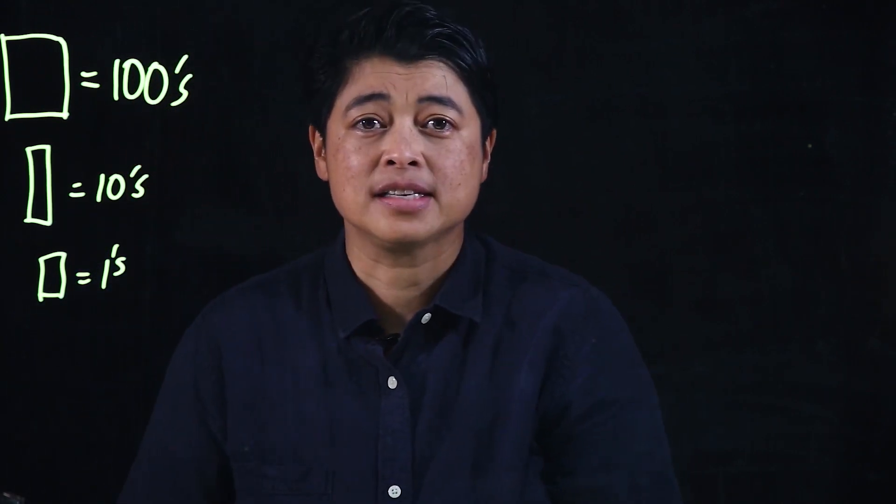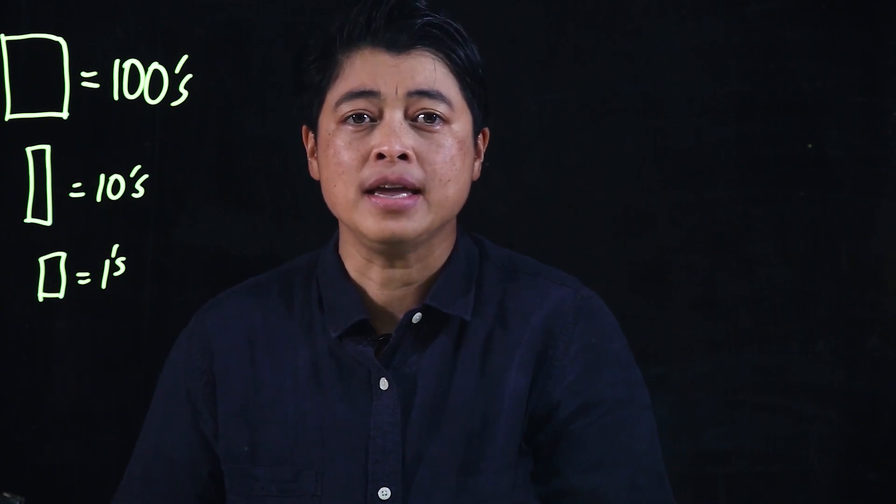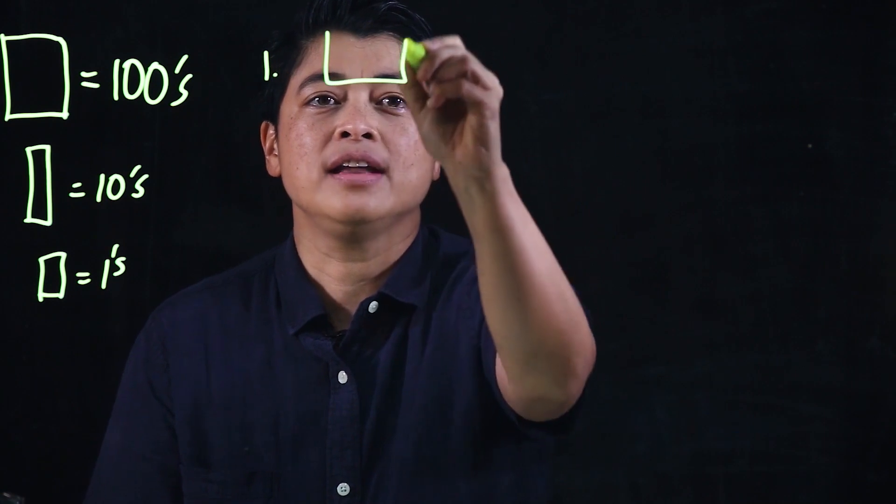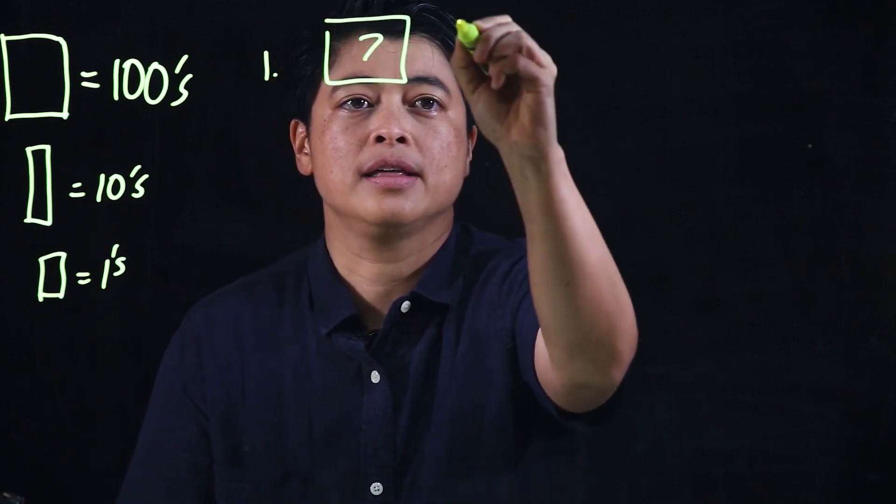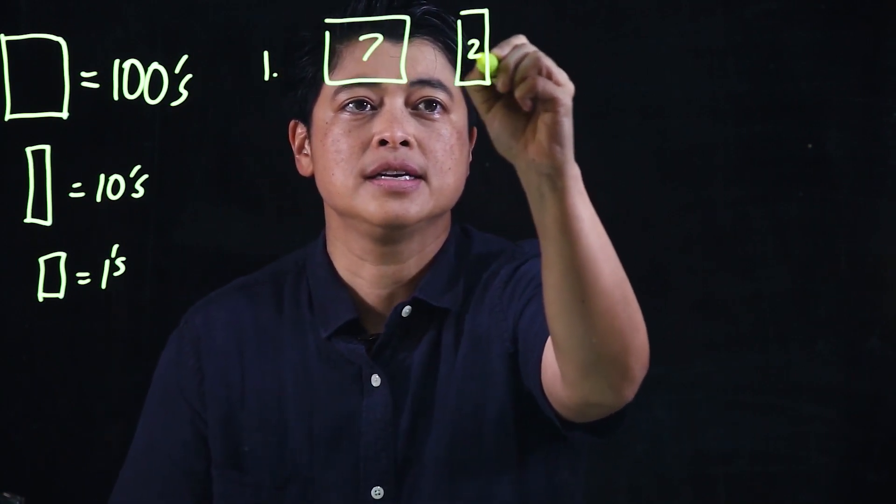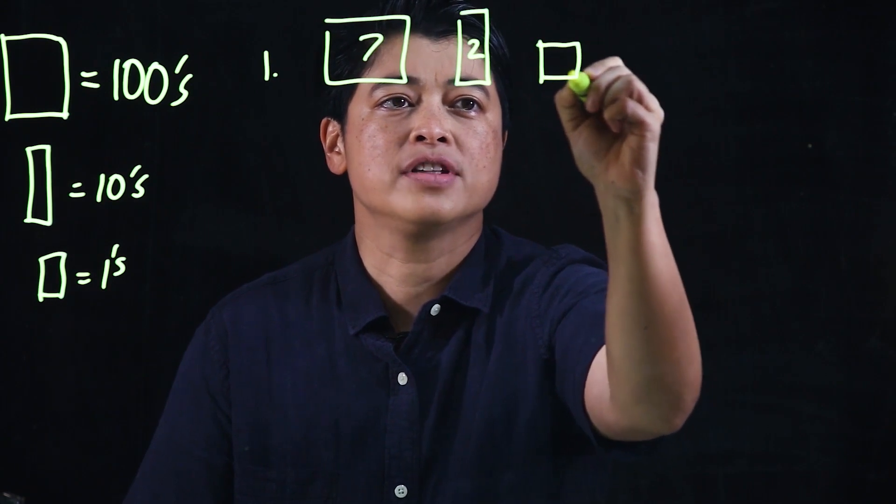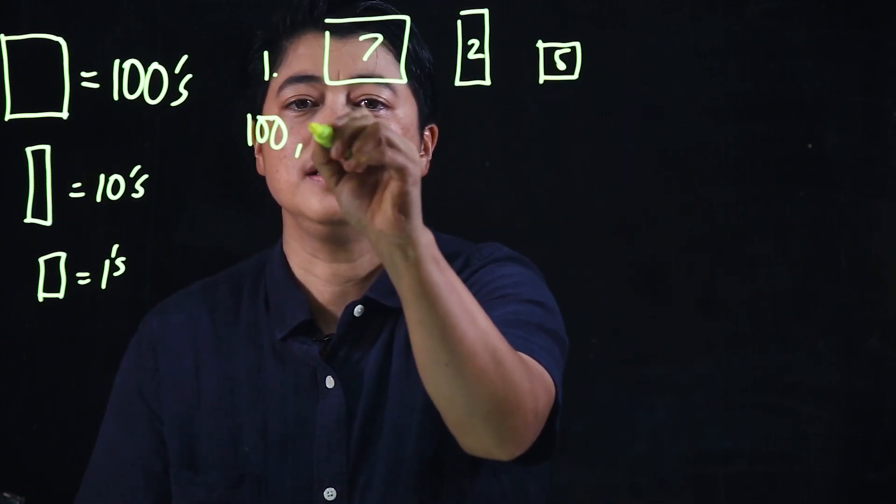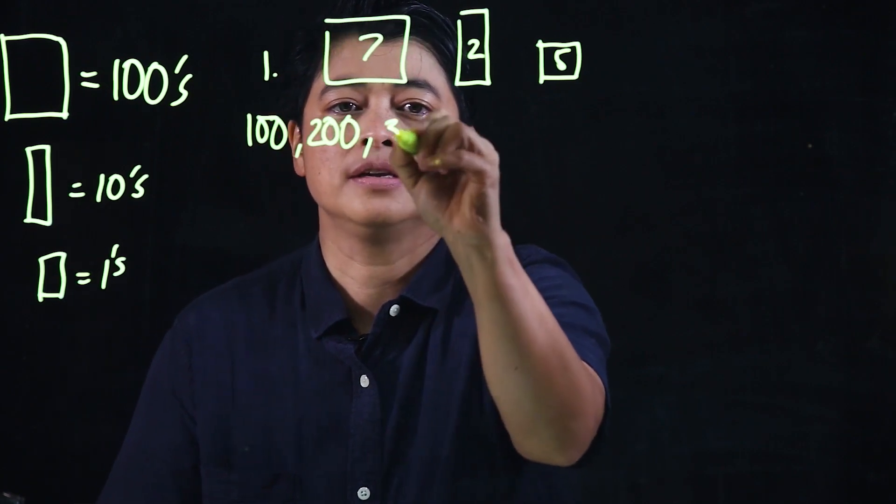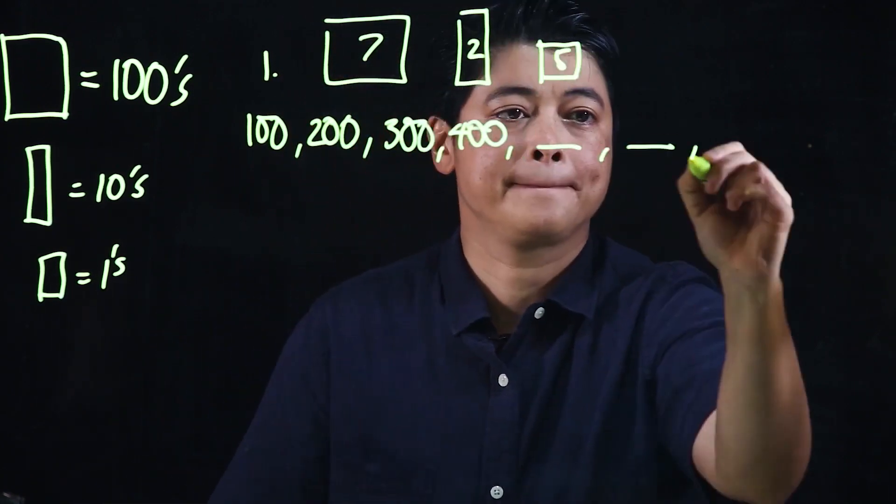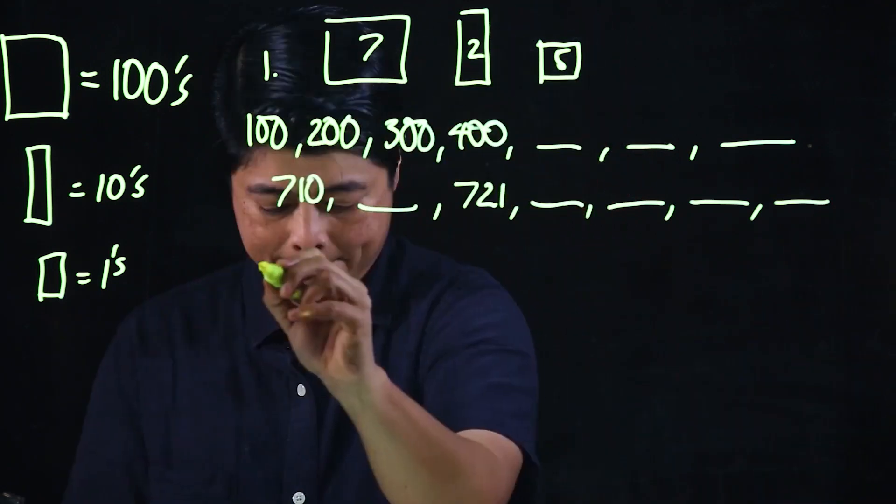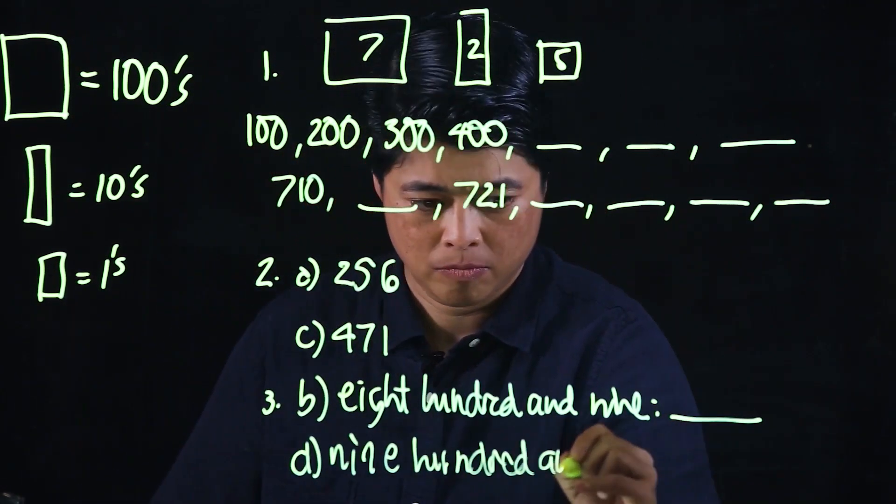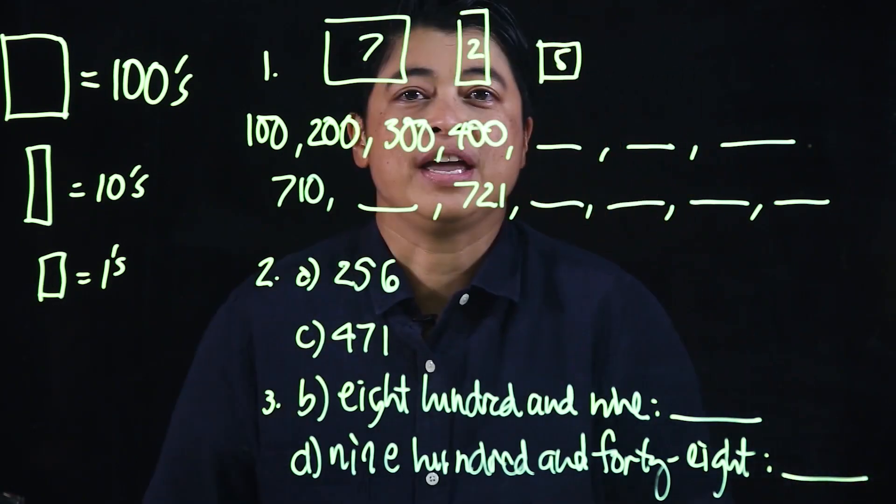So on page 6 of PB2A, we will start with problem number 1. There are seven of these blocks, and then there's two of these, and there's five of the smaller ones. So it begins with one-hundred, two-hundred.